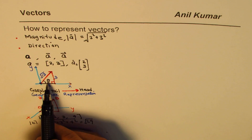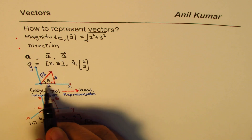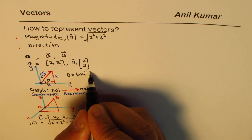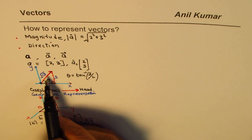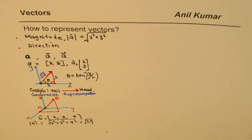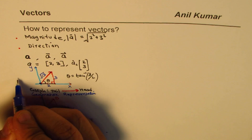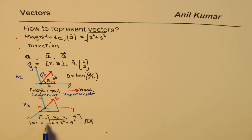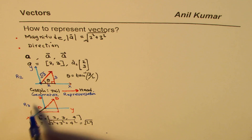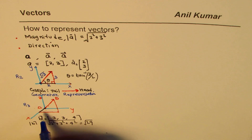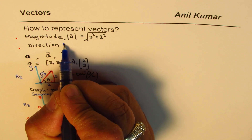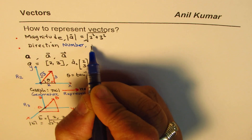For direction in R2, you can say theta equals tan⁻¹(3/2), which gives you the direction angle. In R3, you find direction using the x, y, z components — these are called direction numbers. We also use direction cosines.